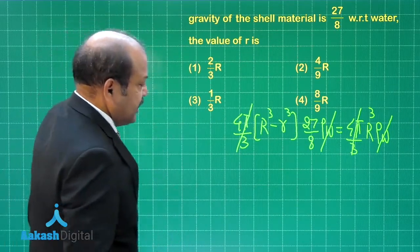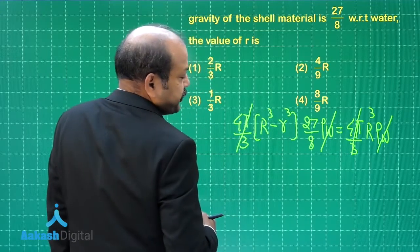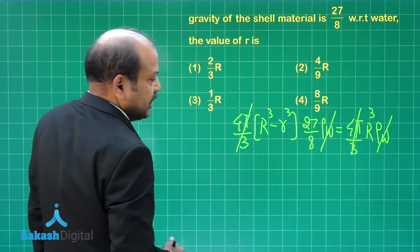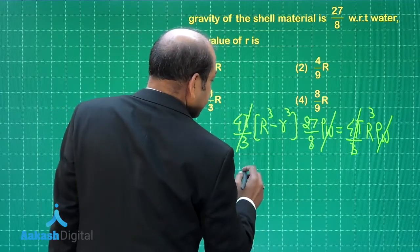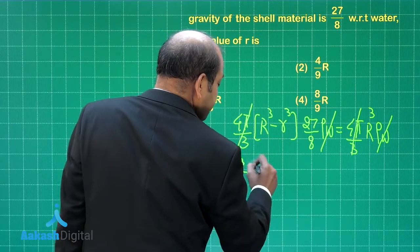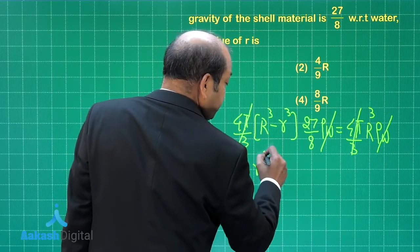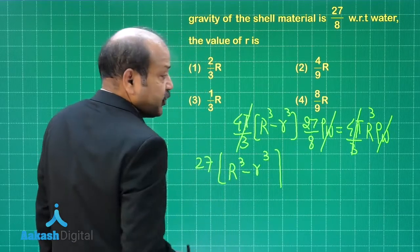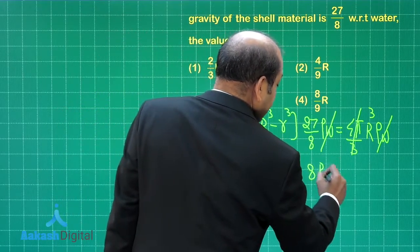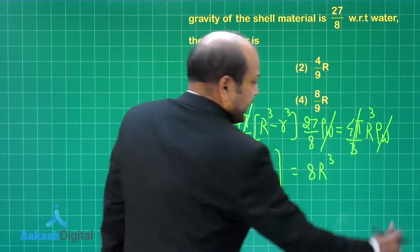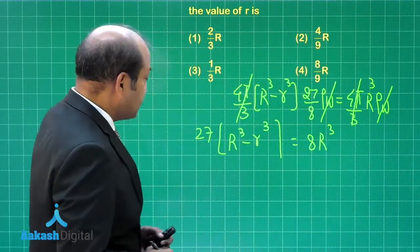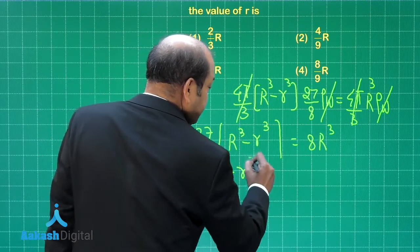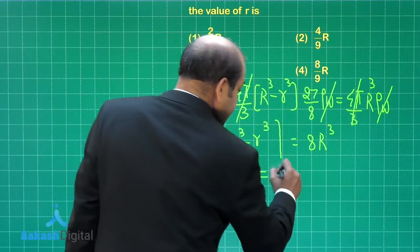What we get is R cube minus small r cube into 27 by 8 is equal to capital R cube, or we can put it like R cube minus small r cube times 27 by 8 equals capital R cube.